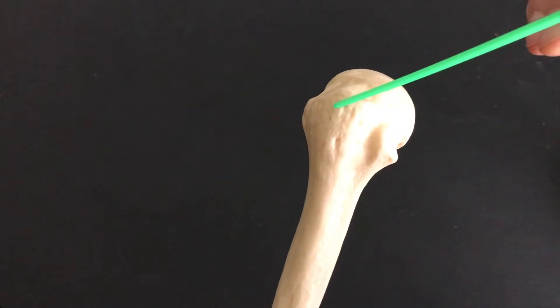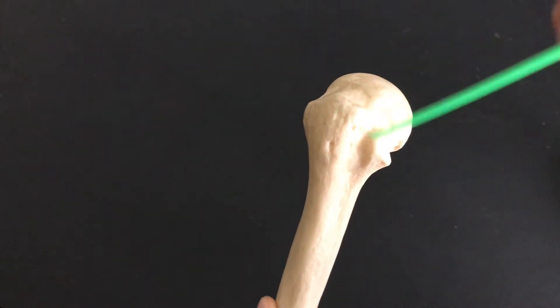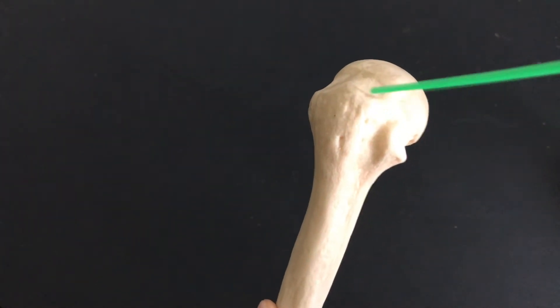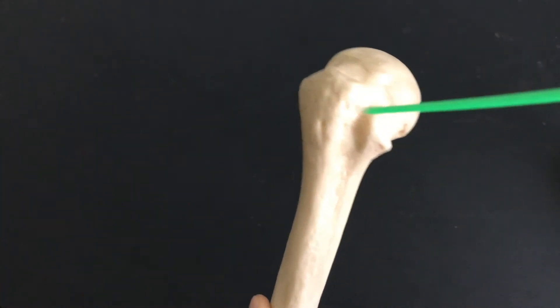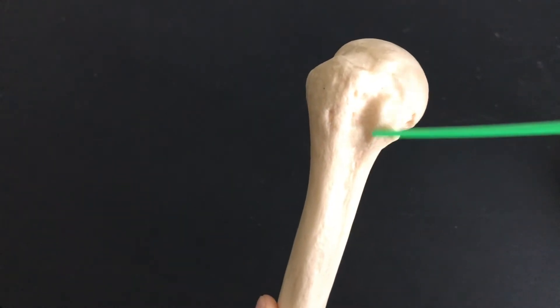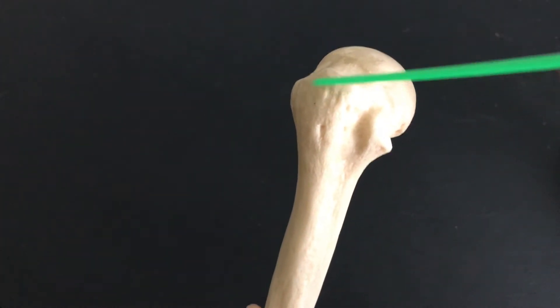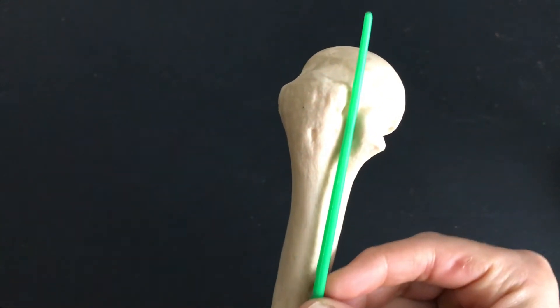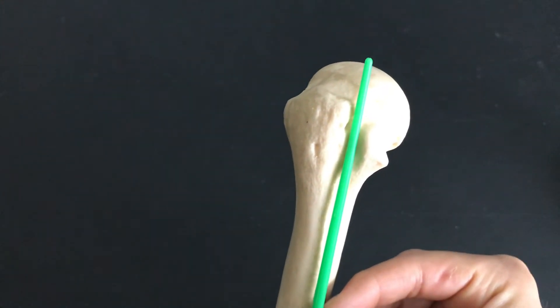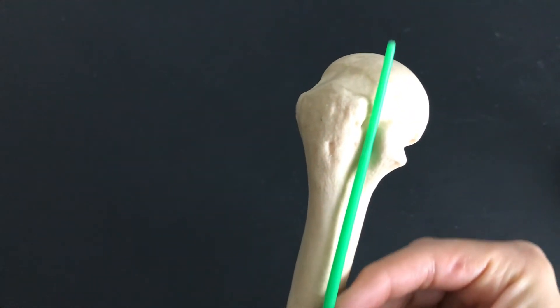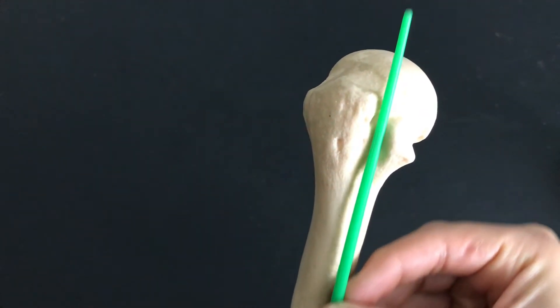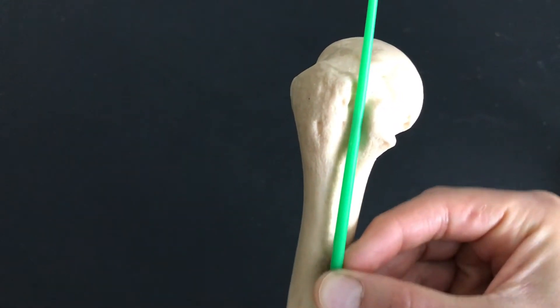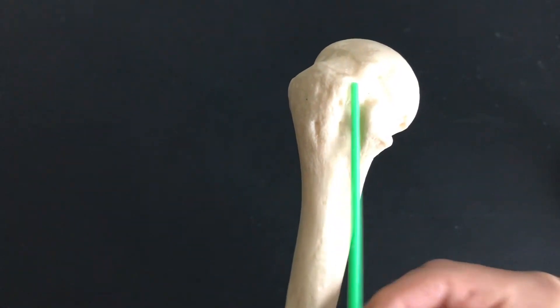This big one is what we call the greater tubercle, the smaller one obviously the lesser tubercle. And running right in between the tubercles is something called the intertubercular groove, sometimes called the bicipital groove or intertubercular groove.